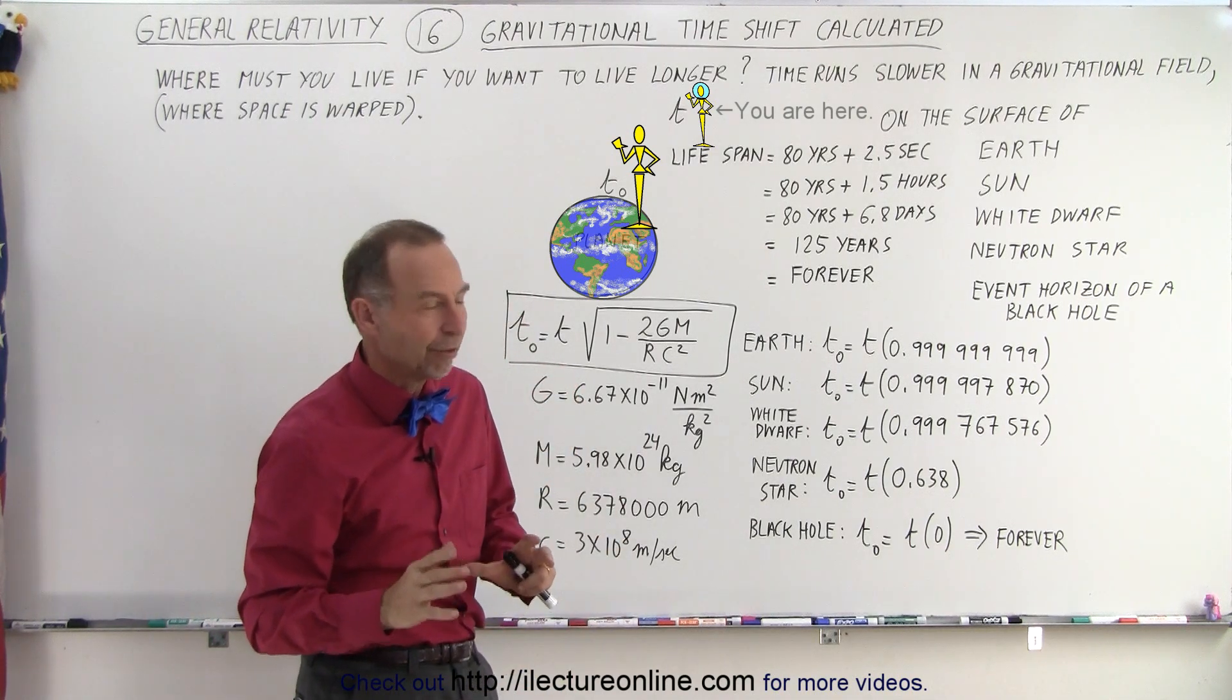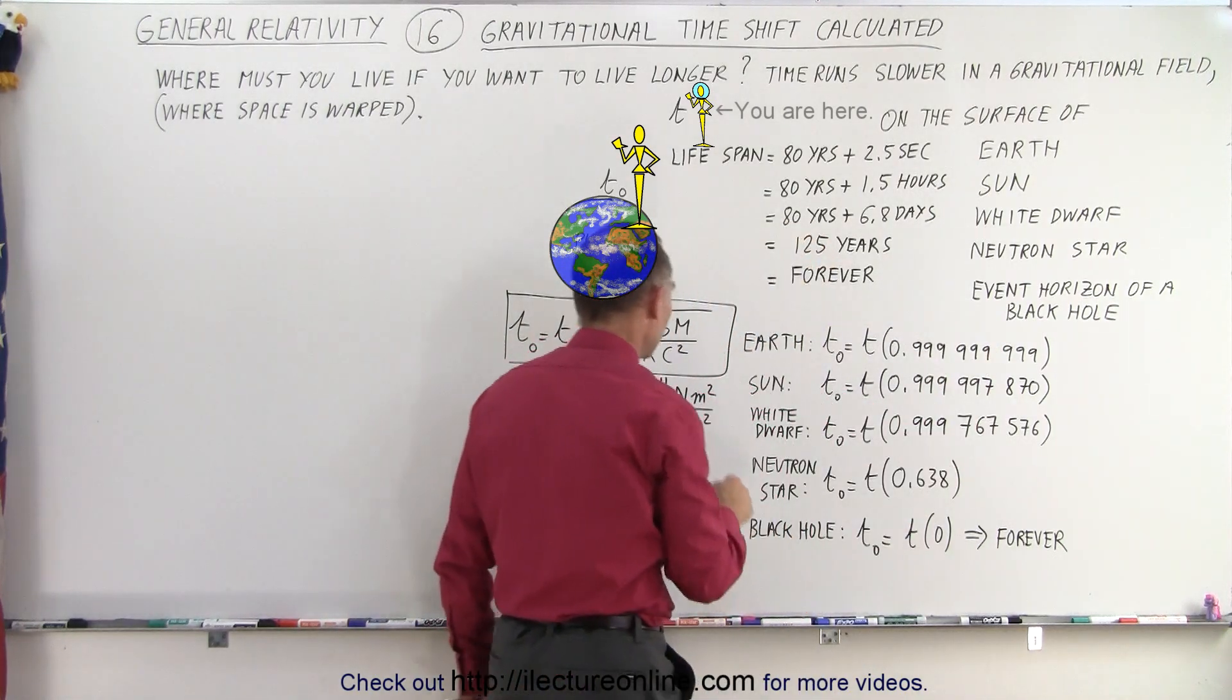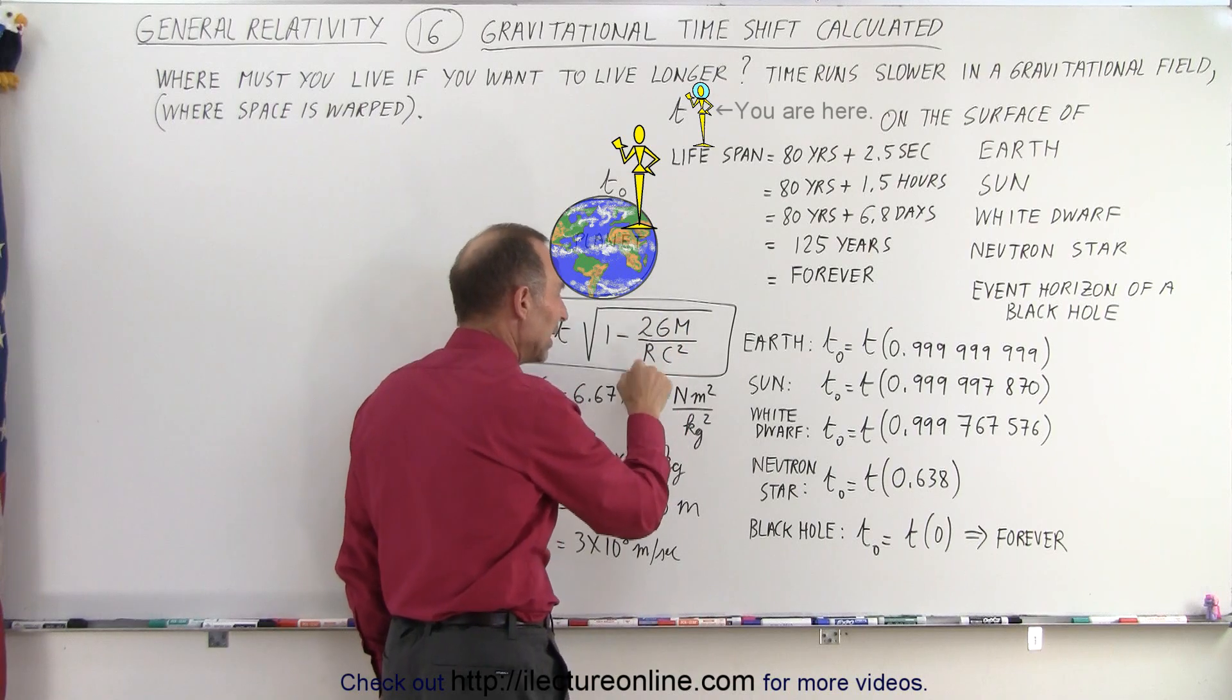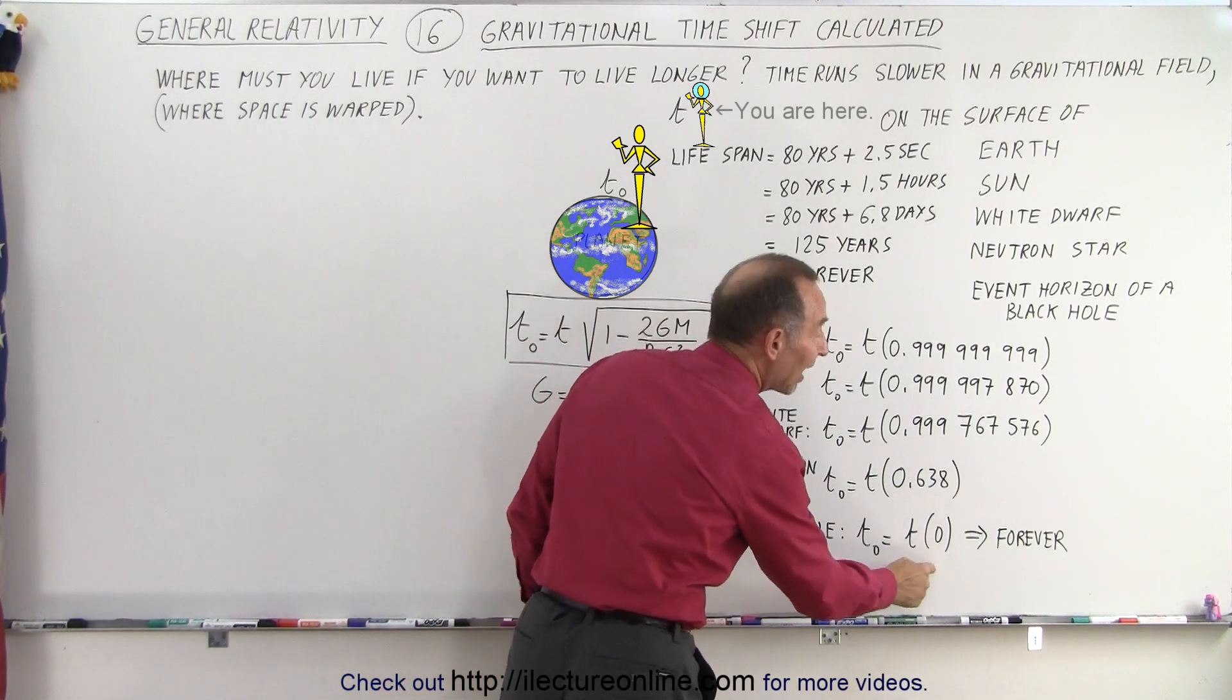And finally, if you want to live forever, you need to go live at the event horizon of a black hole. When you plug in all the values, the mass, the radius of the event horizon of a black hole, time will stand still.